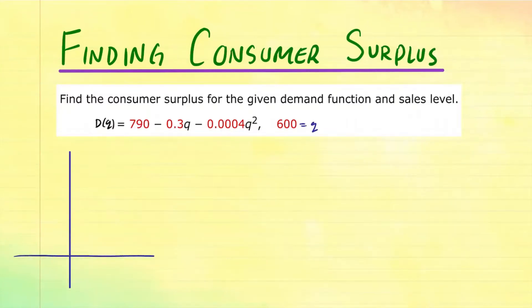So suppose that you have your demand function graphed in here. So this is the quantity, which is the x-axis or the Q-axis, and this is the price. So the demand function looks something like this. It's a parabola facing downward. So this is your D(Q).